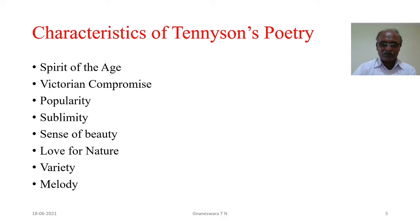Characteristics of Tennyson's Poetry — Spirit of the Age: The Victorian period had its own anxiety in the fields of social, moral, and religion, and his poetry represents the mood of the age in which he lived. Victorian Compromise: His poetry brings out the tendency of compromise between democracy and aristocracy, hope and doubt, religion and science, old and new, and evolution and revolution.